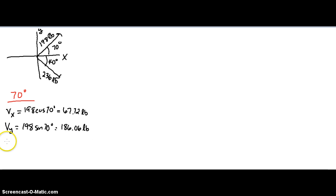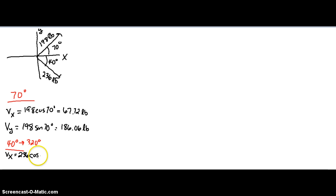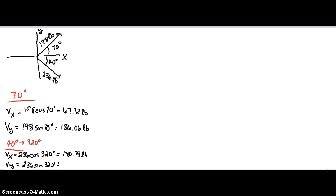Now I also want to do it for the 40 degrees. The problem is that 40 degrees is not in standard position, so to convert it I take 360 minus 40, which gives me 320 degrees. For the horizontal component, V_x equals 236 times cosine of 320 degrees, which gives us 180.79 pounds. The vertical component is 236 times sine of 320 degrees, giving us negative 151.70 pounds.